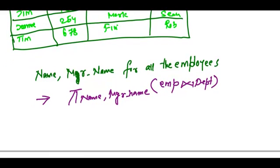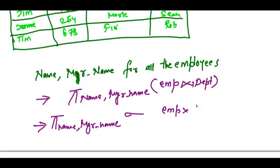Let's suppose we don't have natural join. Then what are we going to do? We would do it in this manner. We would say project name, manager name select from employee cross department.